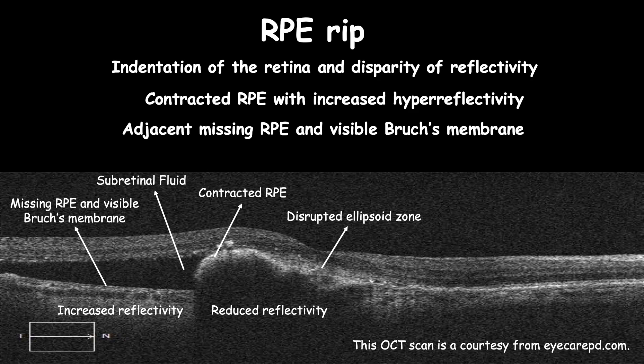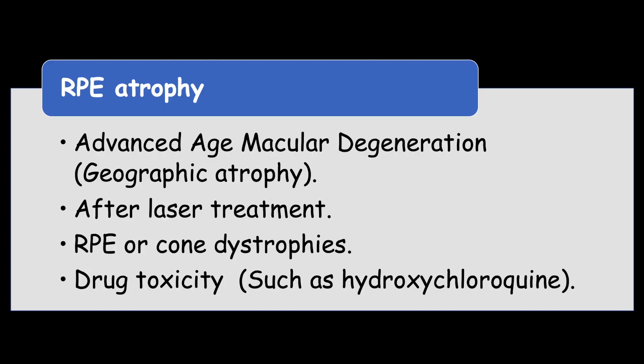RPE atrophy can be due to the following: advanced age-related macular degeneration, geographic atrophy after laser treatment, RPE or cone dystrophies, and drug toxicity such as hydroxychloroquine.